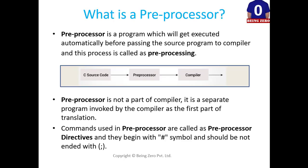A preprocessor is a program which will get executed automatically before passing the source program to compiler and this process is called preprocessing. Here you can see in the below image, we have C source code which will go to preprocessor and later on to compiler.